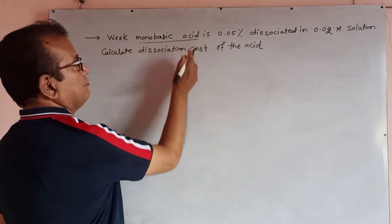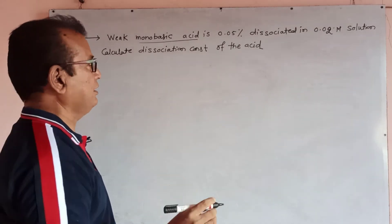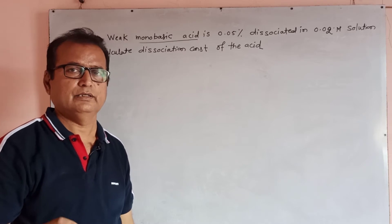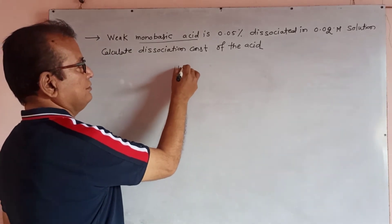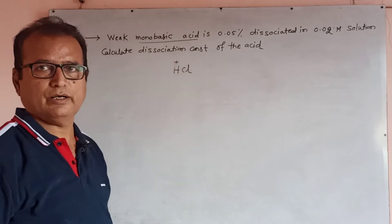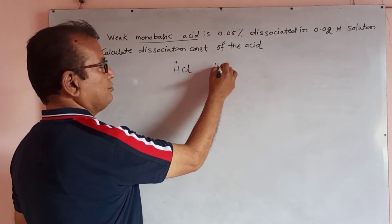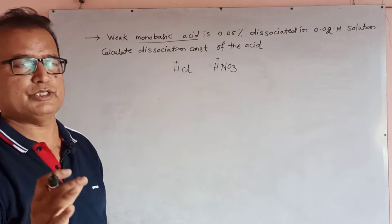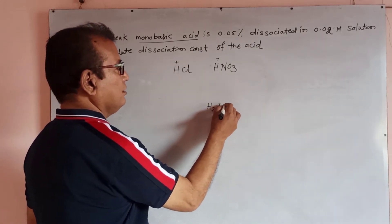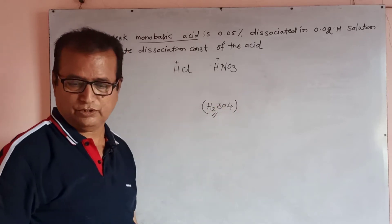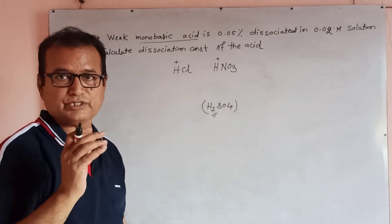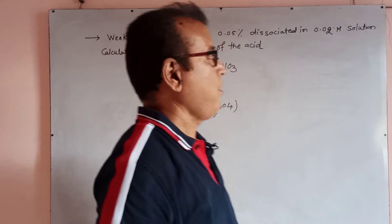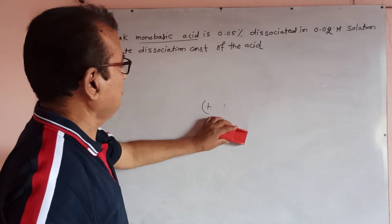Weak monobasic acid — monobasic acid means that for neutralization of this acid, 1 mole of OH⁻ ion is required. Monobasic acid means HCl is monobasic, containing 1 mole of H⁺ ion in its formula. HNO₃ is also monobasic, containing 1 H⁺ ion. H₂SO₄ is not monobasic because after dissociation, 2 moles of H⁺ ions are released. HCl, HNO₃ — such types of monobasic acids consist of 1 H⁺ ion.